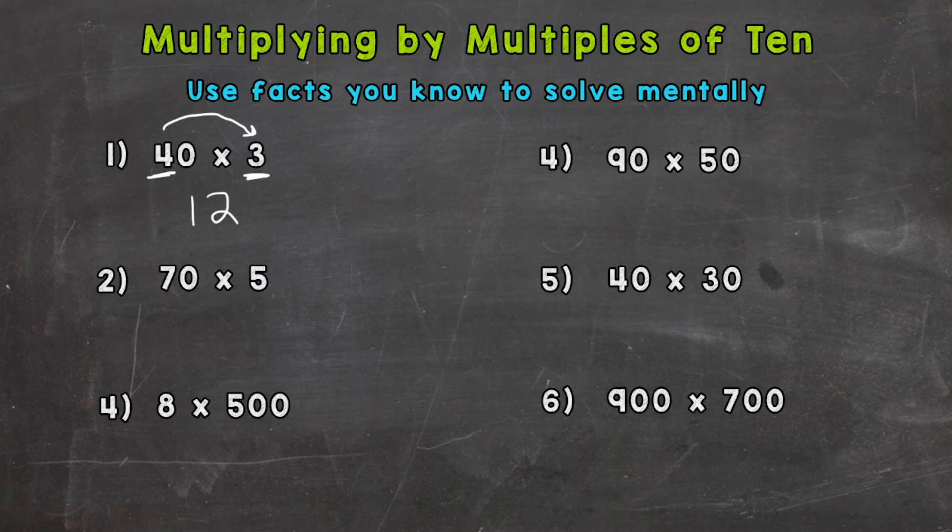Now obviously the answer to 40 times 3 is not 12, so we're going to use this zero here to push the 1 and the 2 from the 12 into the correct place values so that way we do get the correct answer. We have one zero up here in our factors, or original problem here, so we're going to put one zero on the end of 12 and we get an answer of 120. So we took the fact we knew, 4 times 3, wrote our 12, and then used the zero from the problem, put it on the end of that 12, and it pushed everything to the right place value.